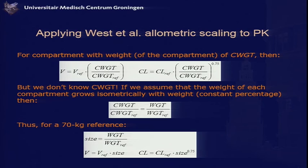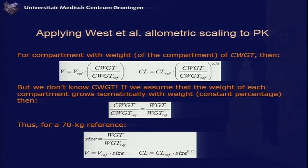How do you take what West described and apply it in PK? In pharmacokinetics, you talk about compartments. The direct approach is to assume some pharmacokinetic volume equals a reference volume times the compartmental weight divided by a reference weight — scaled to the first power — and clearance equals a reference clearance times compartmental weight divided by reference weight to the three-quarter power. Since we don't know compartment weights, if we assume each compartment grows isometrically with total weight, then for a 70 kg reference, size equals weight over 70 kg. Volumes equal reference volume times that size. Clearances equal reference clearance times size to the three-quarter power.